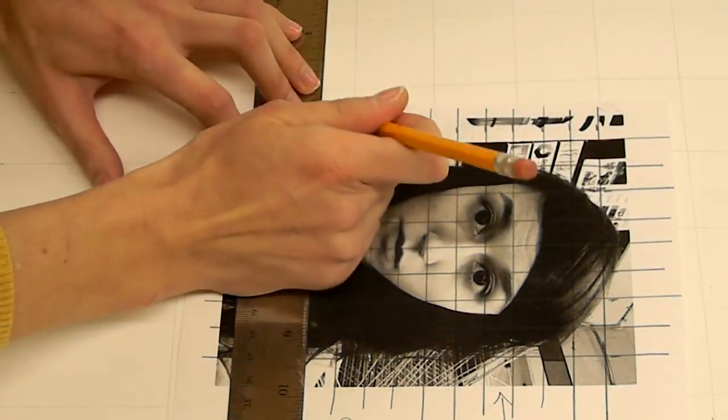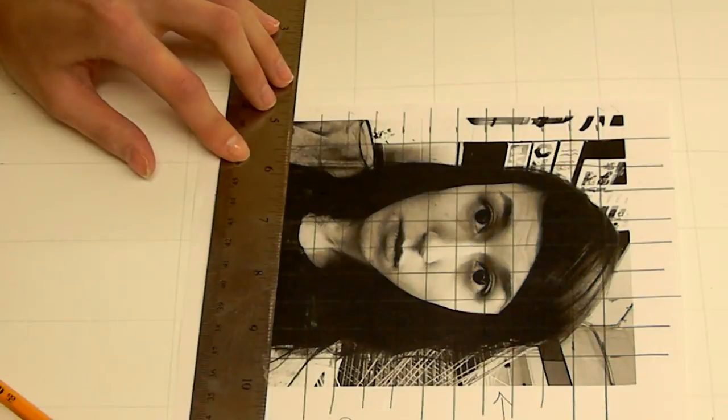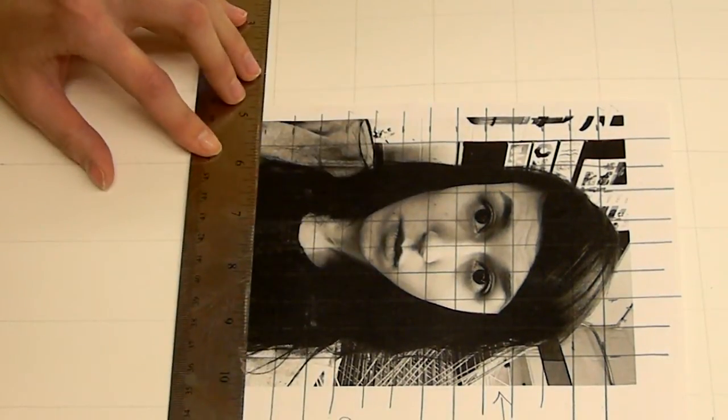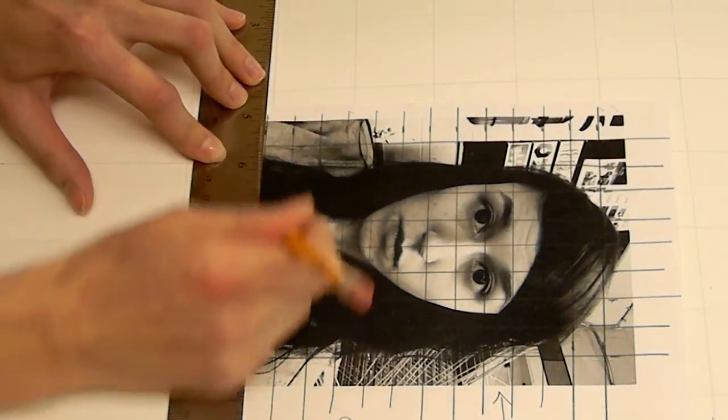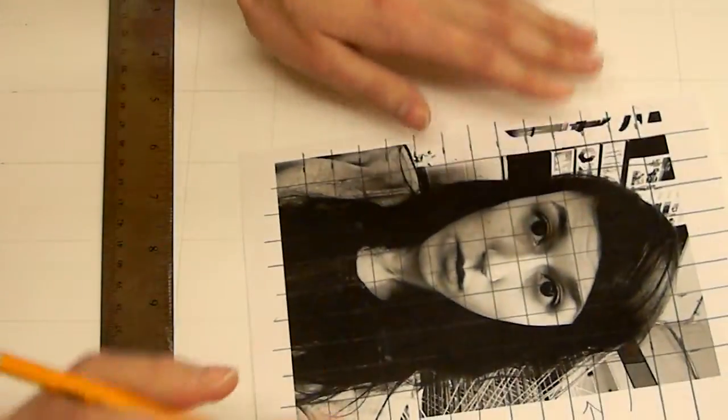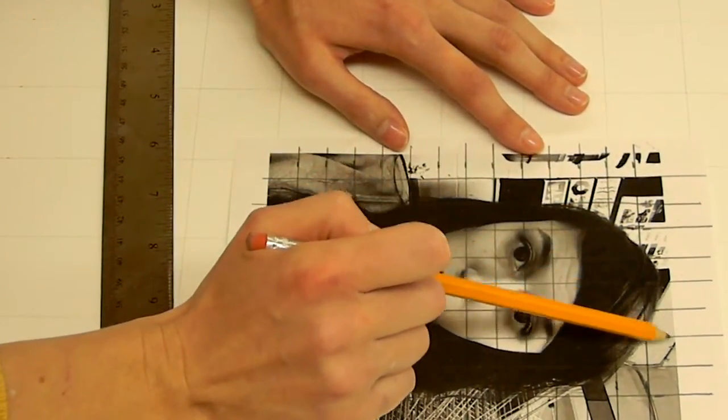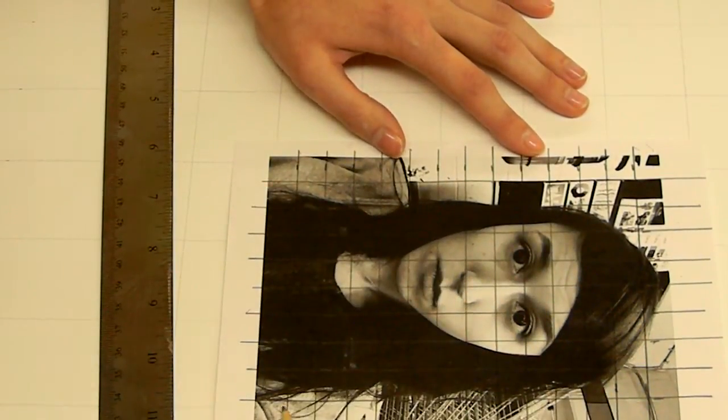I'm sure you've all worked with grids before and know the gist. When you're finished you should have your grid 10 blocks—1, 2, 3, 4, 5, 6, 7, 8, 9, 10—by 14.